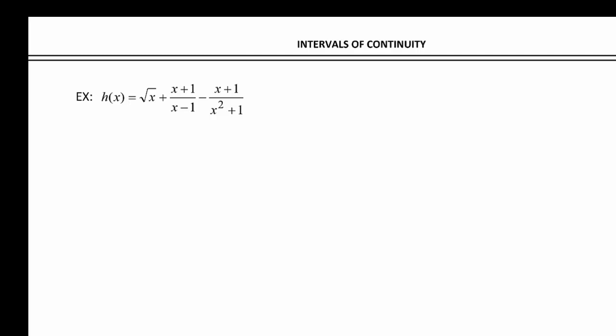So we need to find the domain of this. Well, there's a variety of things happening. We know that a domain is all real numbers, unless we have a variable in the denominator, or under an even index radical. Well, we got all those things, right?